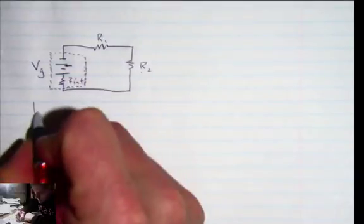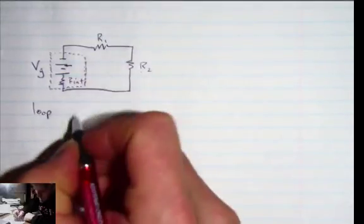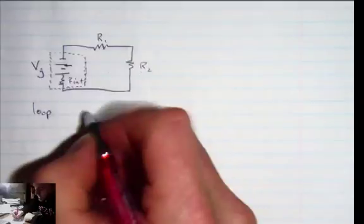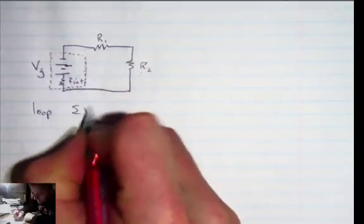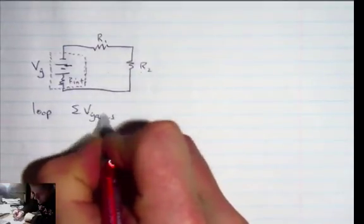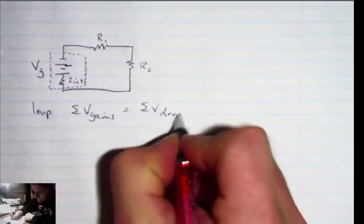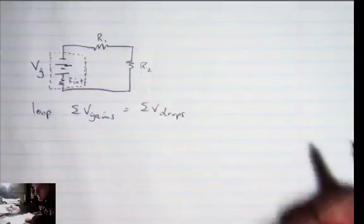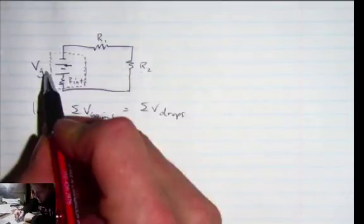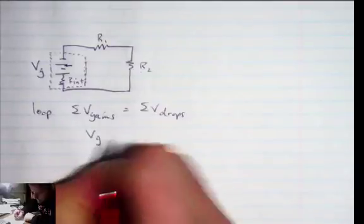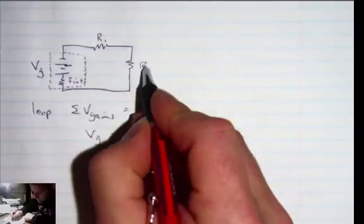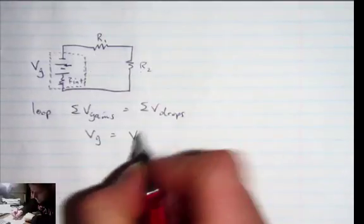So we have the loop rule which is applicable in any circuit, for every loop: that the sum of the V gains equals the sum of the V drops. Looks a lot like an energy conservation equation. So in this circuit there is one V gain.